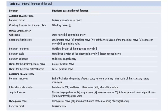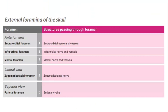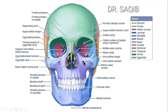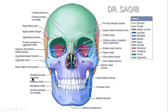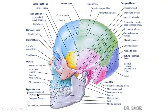Now for the external foramina of the skull. In the anterior view, you can see the supra-orbital foramen, infra-orbital foramen, and the mental foramen. The supra-orbital foramen leads to the supra-orbital nerve and vessels. The infra-orbital foramen leads to the infra-orbital nerve and vessels. The mental foramen leads to the mental nerve and vessels.